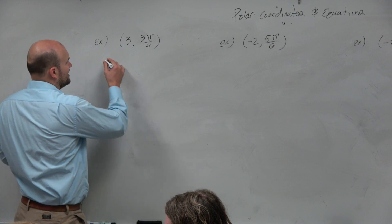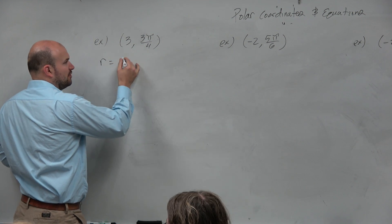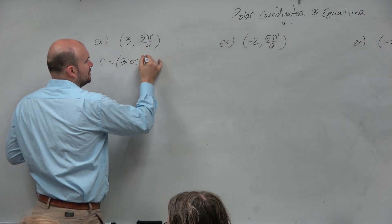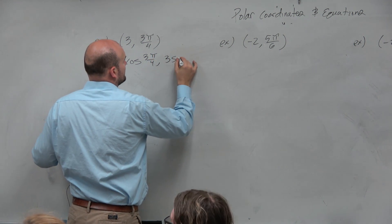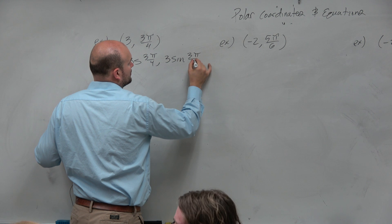So the first thing, if I wanted to write this in rectangular form, this point would simply be 3 cosine of 3 pi over 4, comma, 3 sine of 3 pi over 4, right?